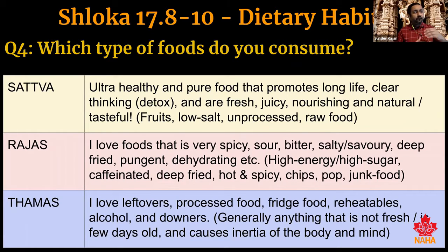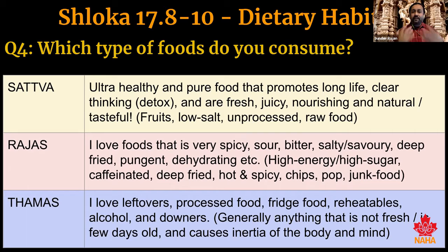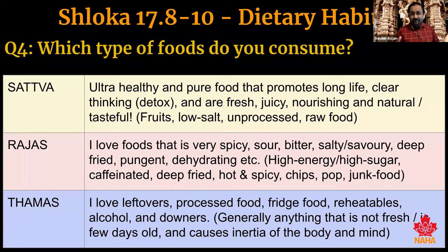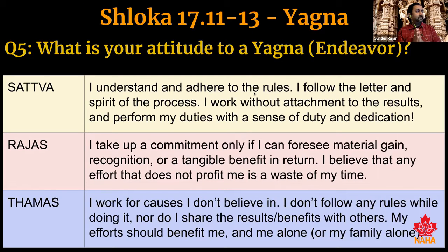The same applies to information consumption. Are you reading books, listening to discourses like Swamiji's speeches — content that makes you intelligent and gains knowledge? Or are you watching ten people fight and shout on news channels? Or consuming depressing TV series? That is the sattvic, rajasic, and tamasic of information intake. Rate yourself accordingly in each column.